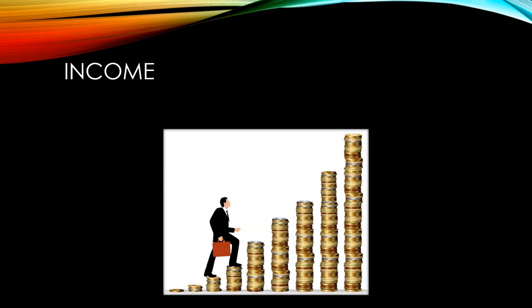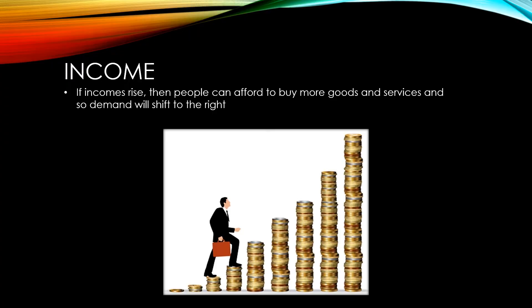If average incomes rise then people are able to afford more goods and services, and so demand for those goods and services will shift to the right. In a period of rising unemployment or high inflation, real incomes may in fact be going down. This will cause demand to shift to the left as people restrict the amount of money they spend on goods and services.